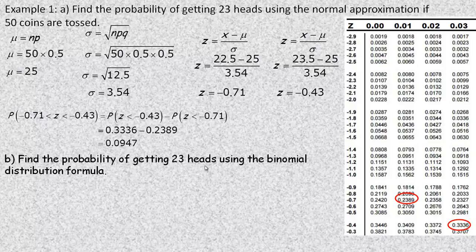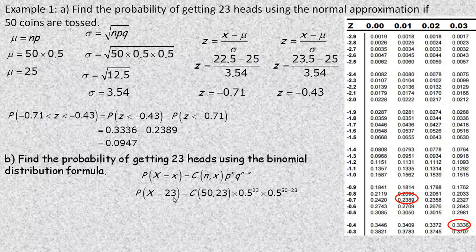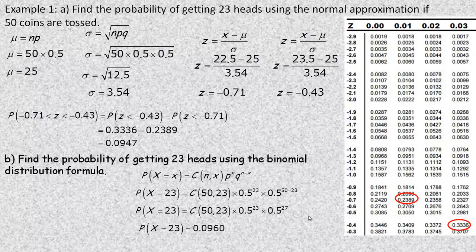In part b, we find the probability using the actual binomial formula. The probability X equals 23 is C(50,23) times 0.5 to the 23 times 0.5 to the 27 — these represent the 23 heads and 27 tails. That calculation gives 0.096, so 9.6%. Comparing 9.5% and 9.6%, it's a tenth of a percent difference — a very good approximation.